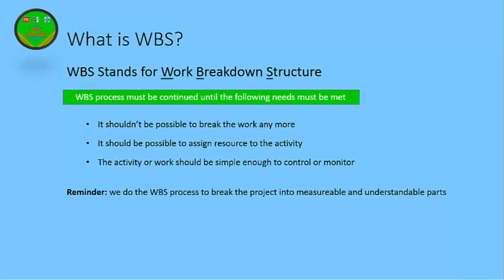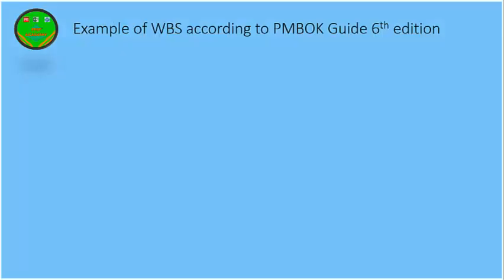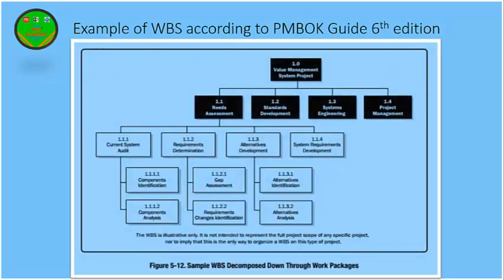We do the WBS process to break the project into measurable and understandable parts or sections. An example of WBS according to the PMBOK Guide is shown here. We can see that in this picture there is a project called the Value Management System project, and this project has different WBS elements.